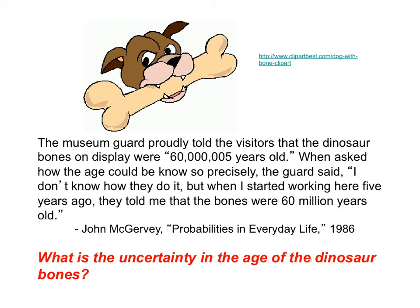This is an interesting story, so stop the video and answer this question. The uncertainty in the number 60 is in the tens place. Remember, 60 is a non-decimal number, so we do not include the zero after the six. That is significant. So that means the uncertainty in the dinosaur bones is plus or minus 10 million years.